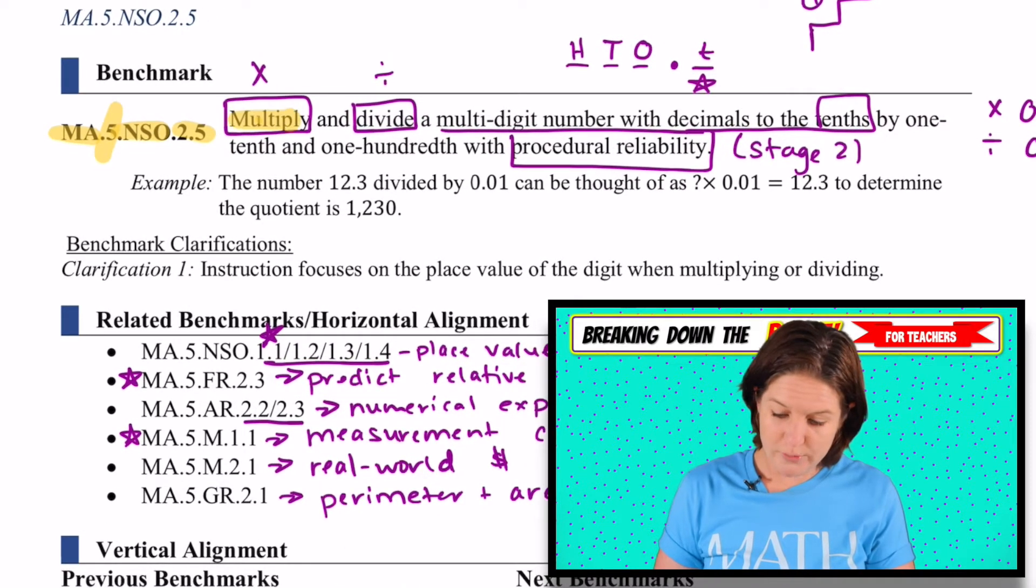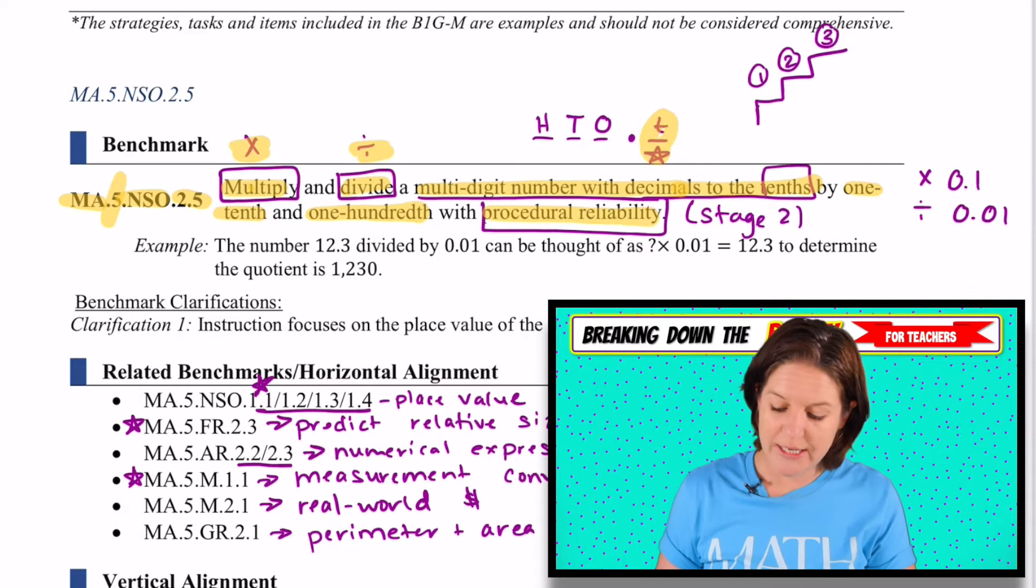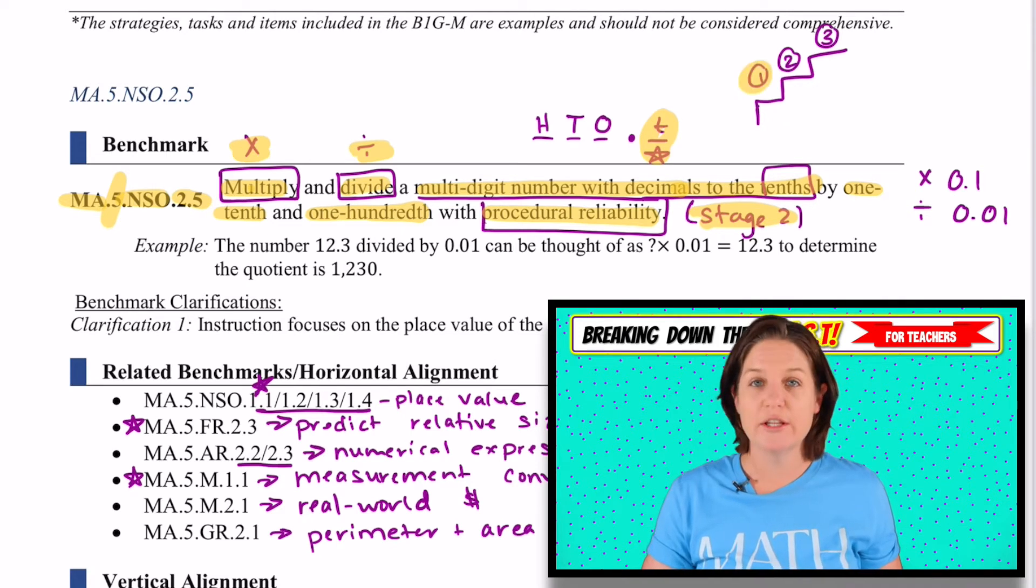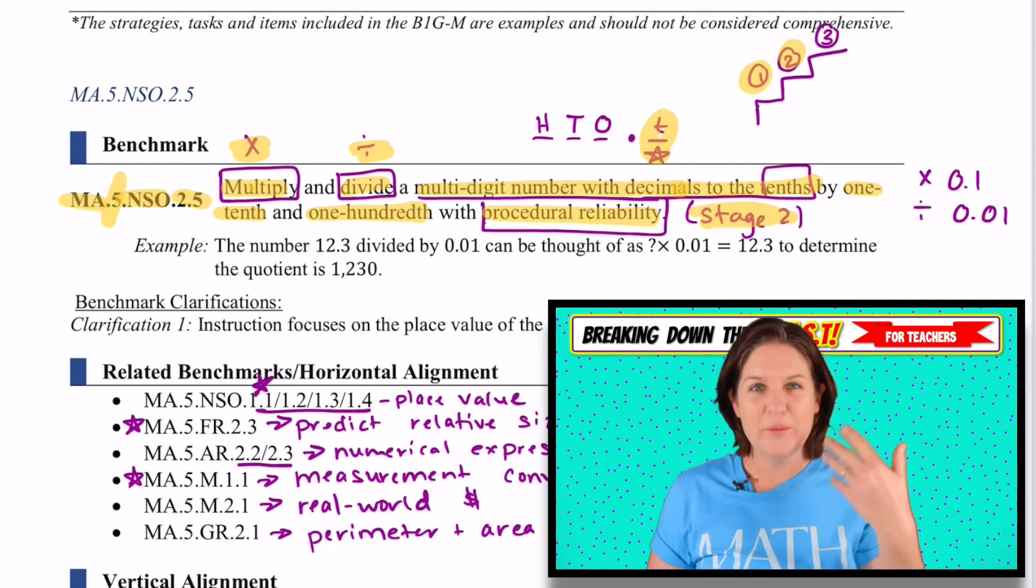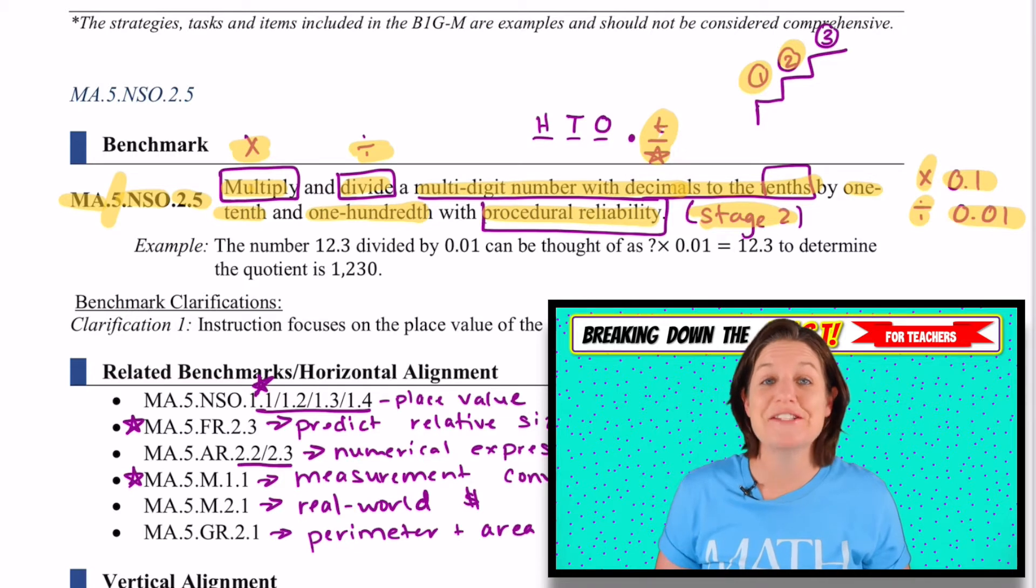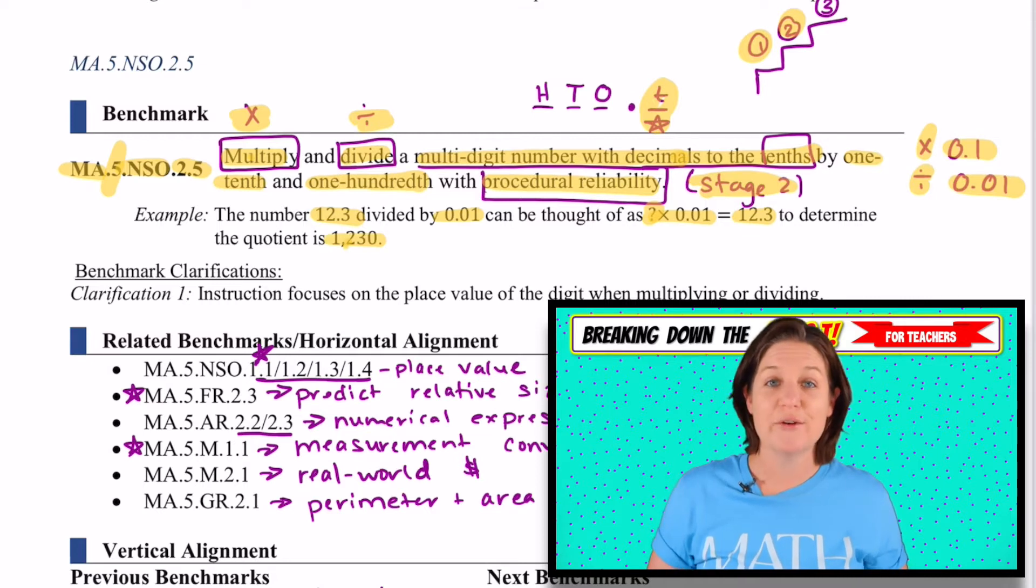The standard says that students will be expected to multiply and divide a multi-digit number with decimals to the tenths. Be careful of that. We're only going to the tenths place by one tenth and one hundredth with procedural reliability. Here's an example. The number 12.3 divided by 0.01 can be thought of as what times 0.01 equals 12.3 to determine that the quotient is 1,230.